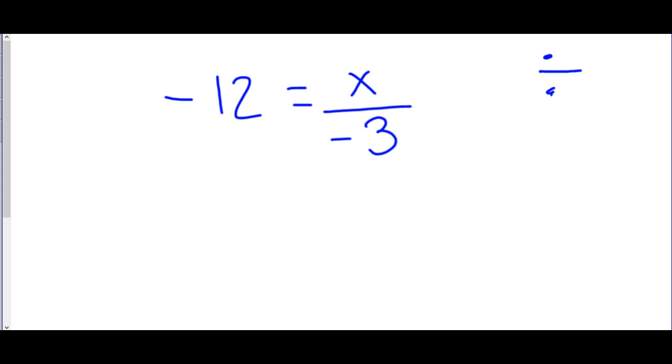We still have to do the opposite, and we know the opposite of divide is multiply. If there is a negative with the 3, when you're dividing, you do need to multiply by negative 3 as well. And what we do to one side, we do to the other.